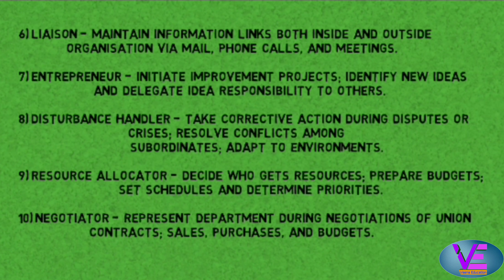As a liaison, a manager makes contacts outside the vertical chain of command, including individuals in other companies. As an entrepreneur, he seeks to improve the unit by initiating projects. As a disturbance handler, he tries to create peace in the organization. As a resource allocator, he decides what resources are available. As a negotiator, he tries to negotiate within and for the organization.